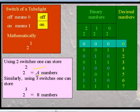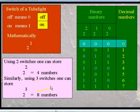This means if you use 2 switches, you can store 4 numbers. Similarly, if you use 3 switches, you can store 8 numbers. Similarly, if you use 8 switches, you can store 2 raised to power 8, which equals 256 numbers.